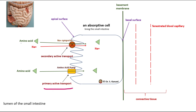Some other amino acid molecules are transported through the apical surface using a sodium ion symporter — a protein that transports both amino acid and sodium ion into the cell in the same direction. This is secondary active transport. So on the apical surface of absorptive cells, some amino acids are transported by primary active transport using amino acid pumps, and others are transported using the sodium ion symporter, which is secondary active transport.